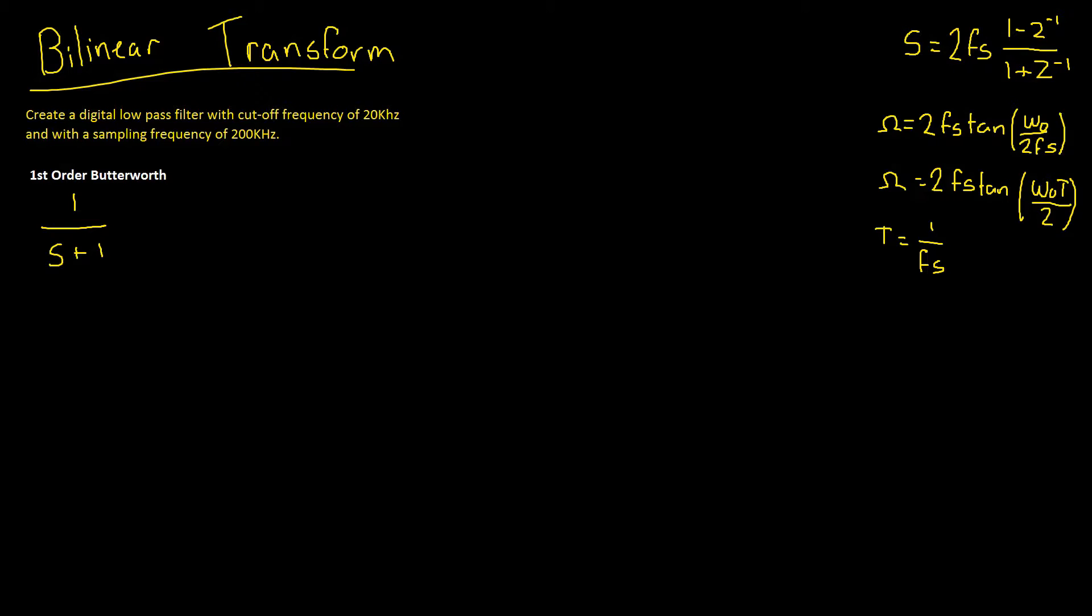So before we get started, you might be wondering what are these equations here in the top right hand corner? Well, our S equals 2FS times 1 minus Z to the power of negative 1, divided by 1 plus Z to the power of negative 1, is our bilinear transform.